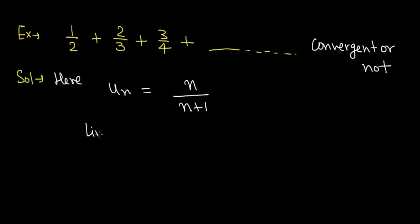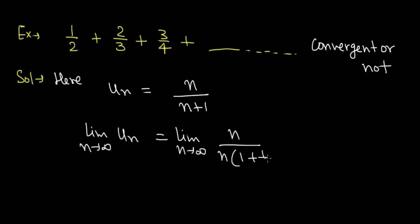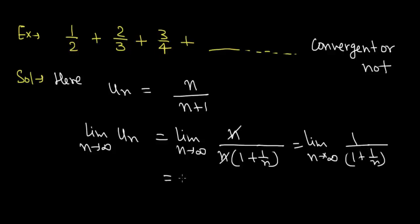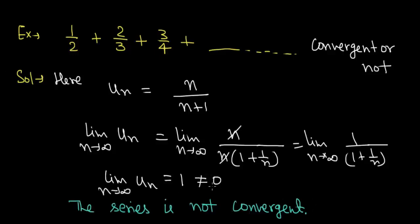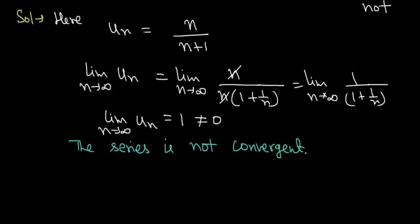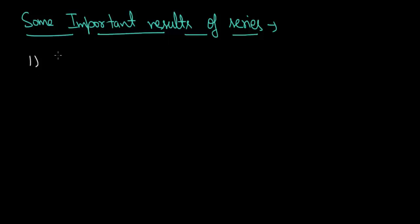Now compute the limit as n tends to infinity of uₙ = n/(n+1). Factor n from the denominator: limit of n / (n(1 + 1/n)) = limit of 1/(1 + 1/n). As n → ∞, this equals 1/1 = 1, which is not equal to 0. Since the limit is not equal to 0, the series is not convergent.